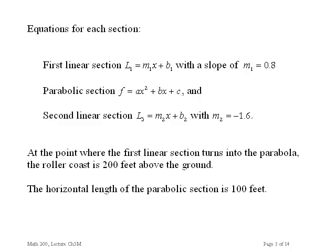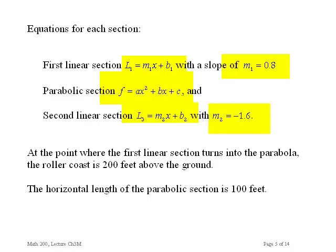After looking at the design criteria and drawing a sketch, we start to write equations. The first linear section is described by a linear equation y = M1·x + B1. The second linear section has another linear equation y = M2·x + B2. The parabolic section is described by y = Ax² + Bx + C. We already know that M1 is 0.8 and M2 is minus 1.6, which eliminates two constants we have to find values for.